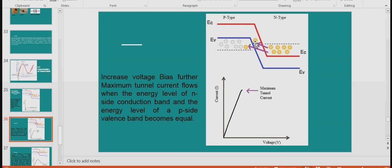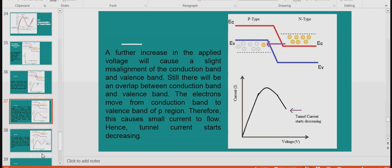Here it shows energy level of n-type conduction band and energy level of valence band. When these both are equal there is maximum recombination at this stage, so you will get maximum tunnel current here. A further increase in the applied voltage will cause a slight misalignment of the conduction band and the valence band of P-type and n-type semiconductor. Still there will be an overlap between the conduction band and the valence band. The electrons move from the conduction band to the valence band of P region. Therefore this causes small current to flow since the current starts to decrease here.